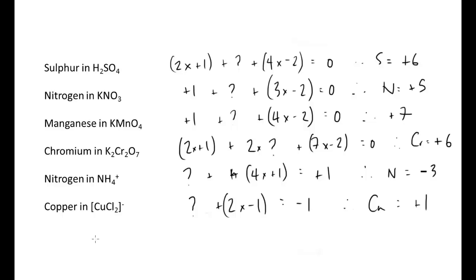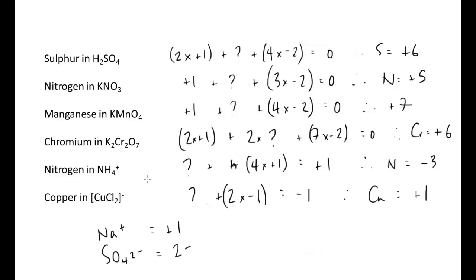For individual ions such as Na⁺, the oxidation state is also plus one. For the sulphate ion SO₄²⁻, the total oxidation state is two minus, and we can work out the sulphur from that knowing the oxygens. The next stage is to look at reactions and build the idea of redox occurring in reduction and oxidation reactions, where we can see oxidation numbers changing as reduction and oxidation occur.